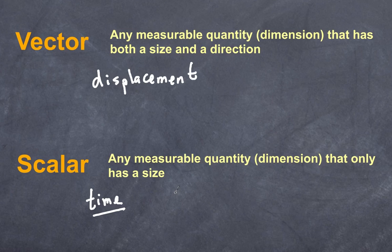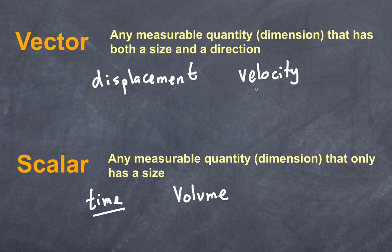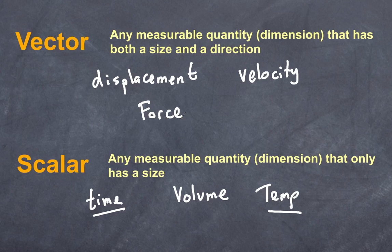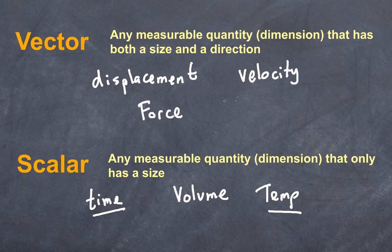Another scalar is volume — volume clearly does not have a direction associated with it. But velocity does; velocity needs to have a directional component, so it is a vector quantity. Temperature cannot be understood with direction, so it's a scalar quantity. But force clearly is a vector. If I apply a force on you, and then I get another friend to apply a force on you, how you move will depend on the direction of the forces applied. Anything that has a directional component is a vector quantity.